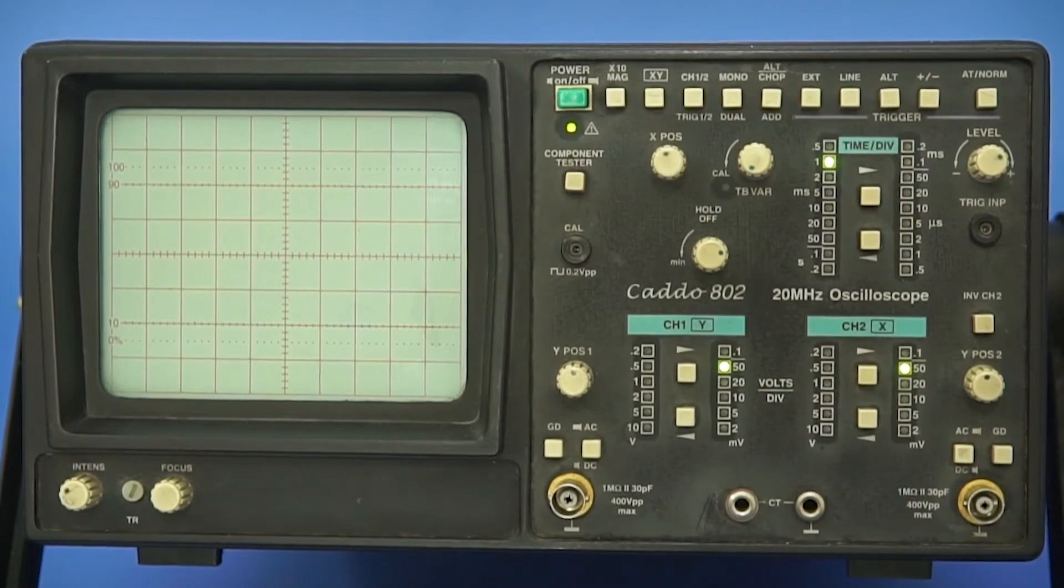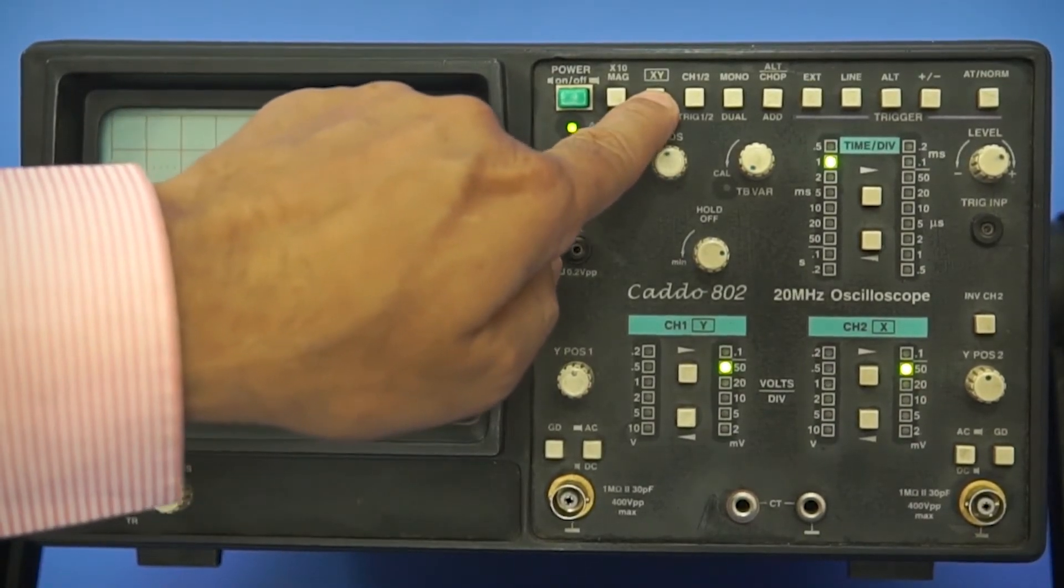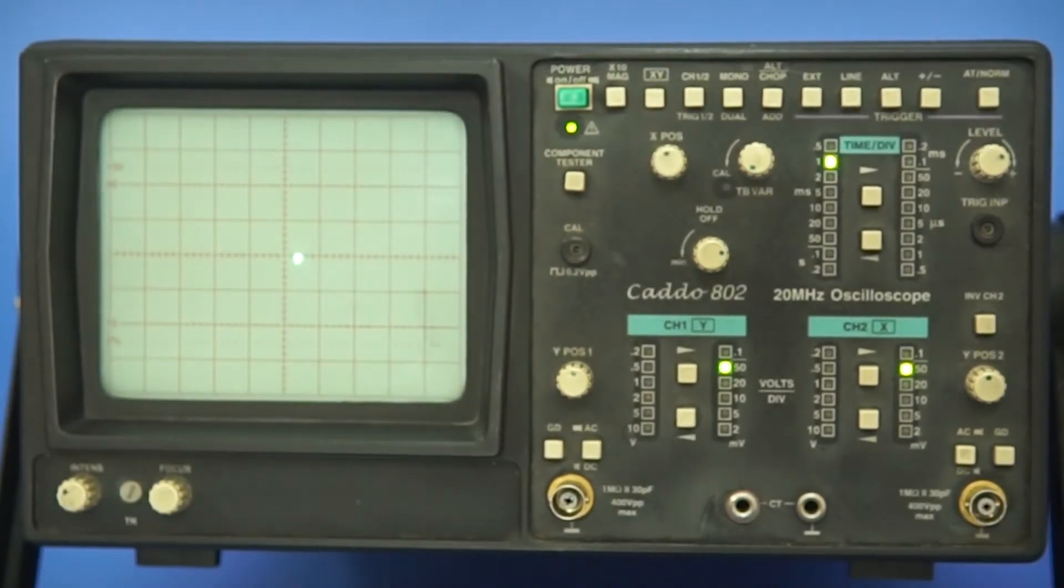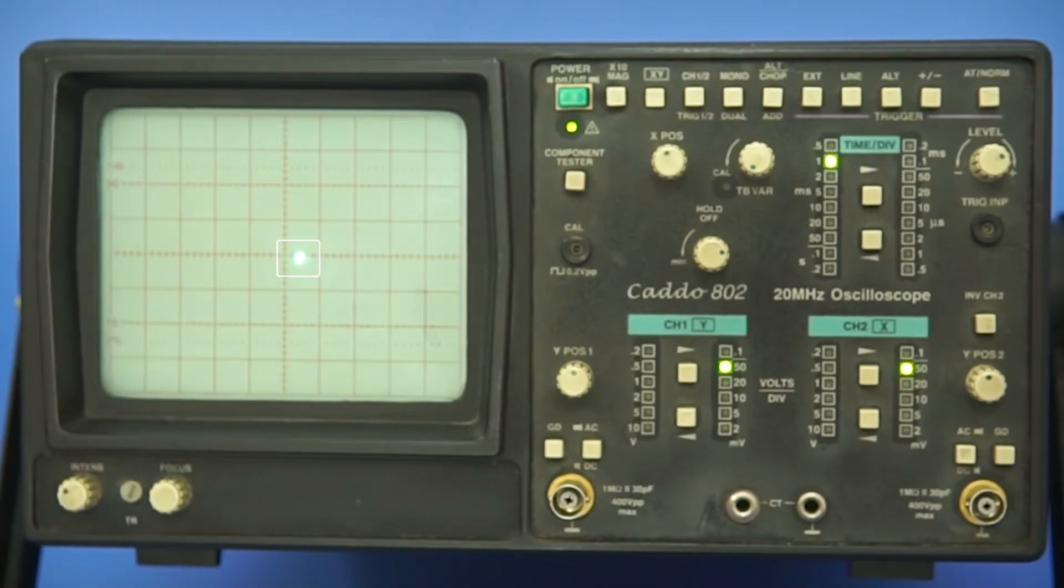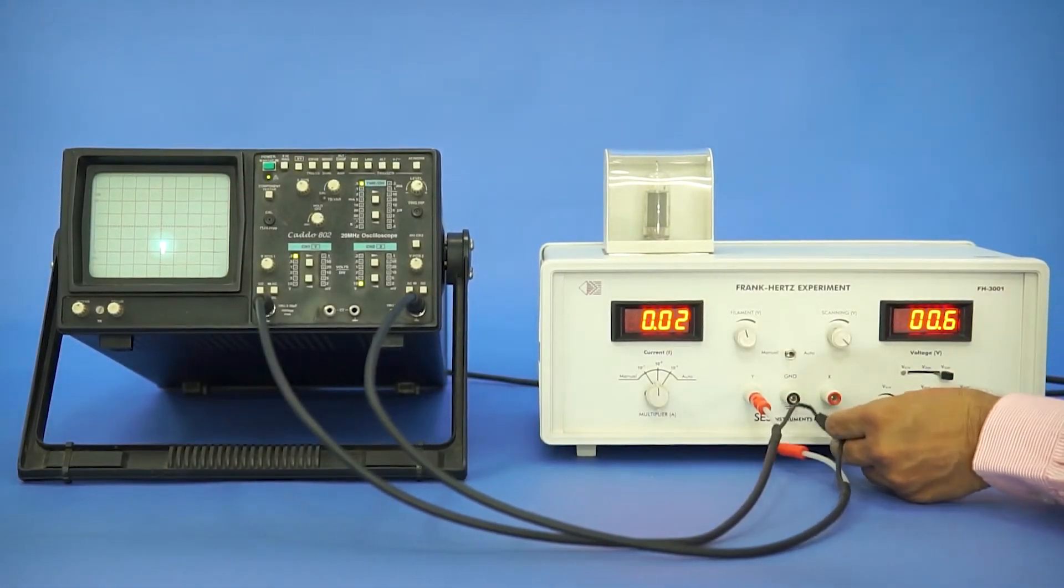Next, place the CRO in XY mode. You will see a dot on screen. Connect the CRO leads with the unit.